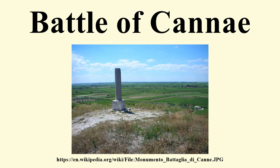Shortly after the start of the Second Punic War, the Carthaginian general Hannibal crossed into Italy by traversing the Pyrenees and the Alps during the summer and early autumn. He quickly won major victories over the Romans at Trebia and at Lake Trasimene. After these losses, the Romans appointed Fabius Maximus as dictator to deal with the threat. Fabius used attrition warfare against Hannibal, cutting off his supply lines and avoiding pitched battles.